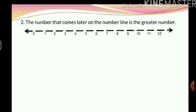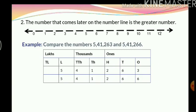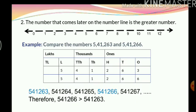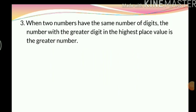Suppose you have numbers like 5,41,263 and 5,41,266. If we compare them on the number line, 5,41,263 comes first while 5,41,266 comes later. Therefore, 5,41,266 is greater than 5,41,263.